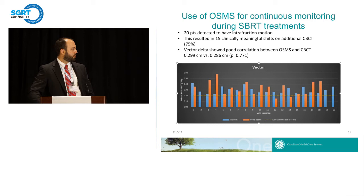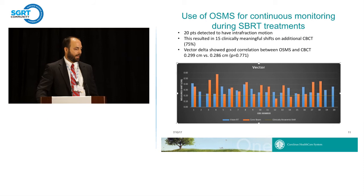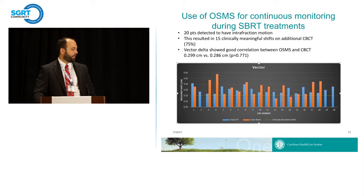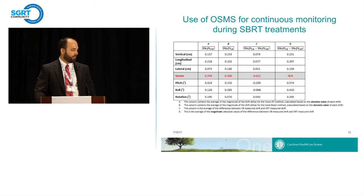There were some instances where OSMS detected a potential interfraction motion and the cone beam CT shift was actually greater — a couple approaching our five millimeter PTV margin. The important thing is that the system is detecting those cases, catching them at the time of the shift. Looking at individual parameters, the correlation is quite high other than in the longitudinal direction, which was a little different but not statistically so. Overall, the correlation was quite high across all degrees of freedom.